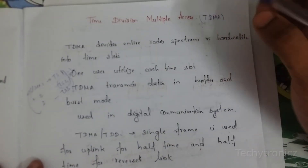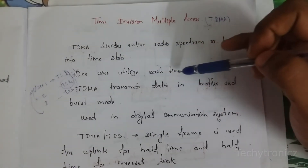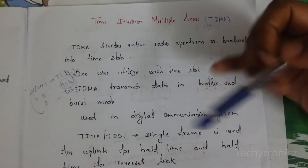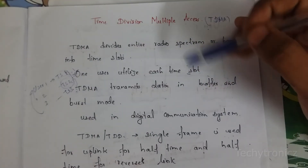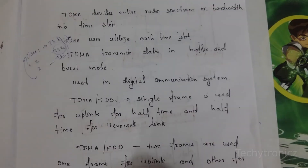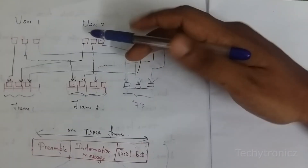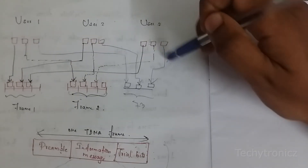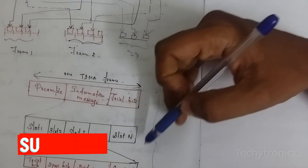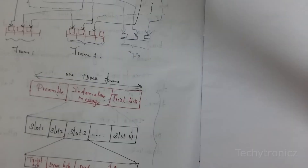In summary, TDMA divides the entire radio spectrum or bandwidth into time slots. Each user is assigned their own time slot, and during other time slots they wait in a buffer and transmit in burst mode. TDMA-TDD uses a single frame for both uplink and downlink, while TDMA-FDD uses two separate frames. This is the concept of TDMA and its frame format. Thank you, students.